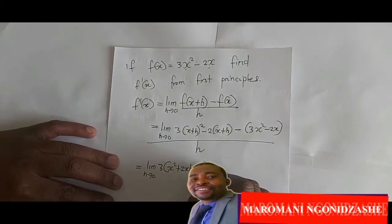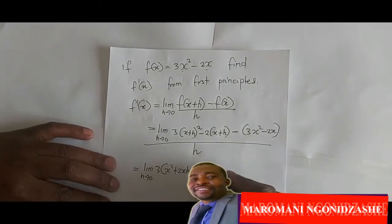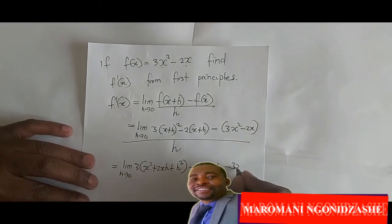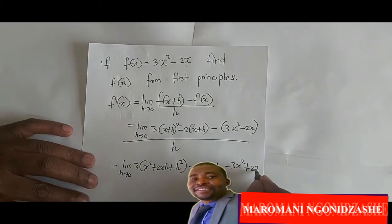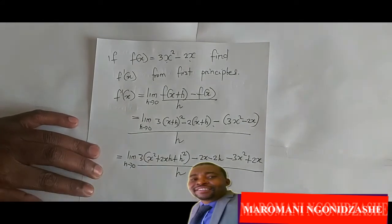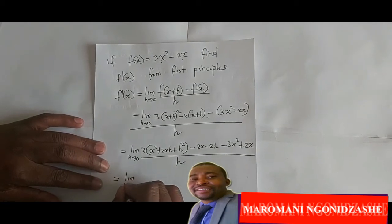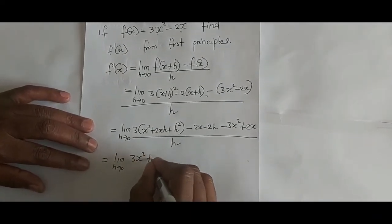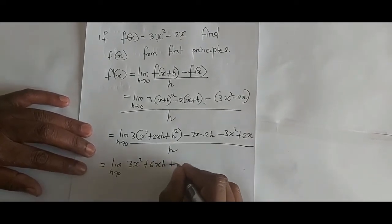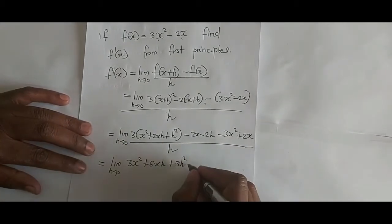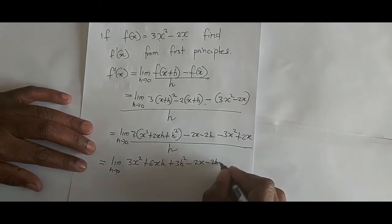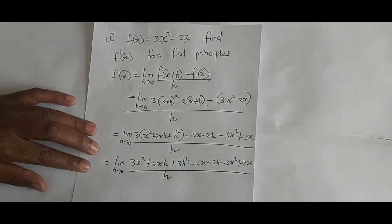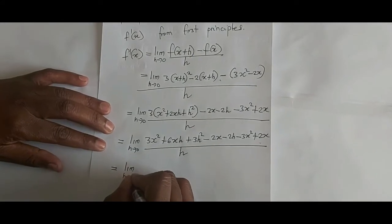Continuing the expansion, we have minus 2x minus 2h, then minus 3x squared plus 2x, all over h. Removing the brackets gives us 3x squared plus 6xh plus 3h squared minus 2x minus 2h minus 3x squared plus 2x, everything over h.